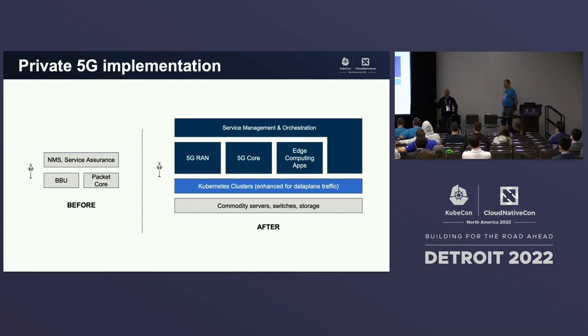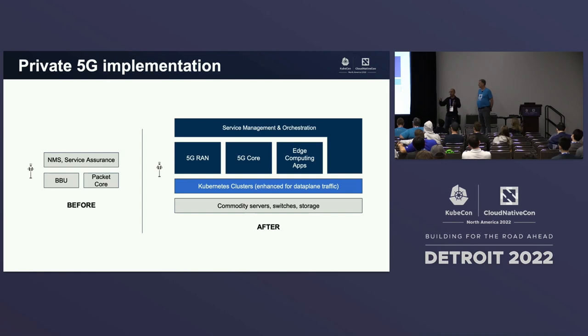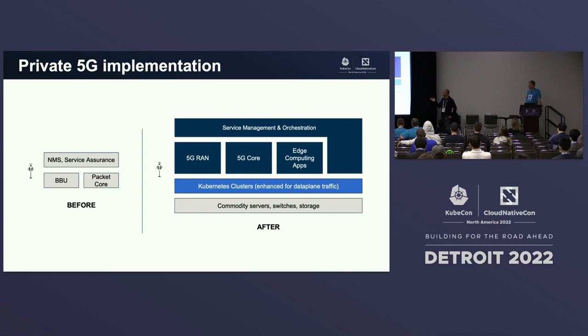What is the connection with Kubernetes? You're thinking this is a private 5G network — why are we at a KubeCon event? If you look at the before picture, that's how networks used to be built. The predecessor to 5G, which is 4G or LTE, used fixed-function appliances — you would cable them up and add a management layer on top. That's not how current networks are going to be built.